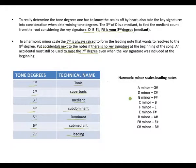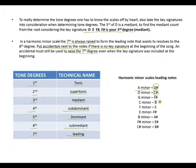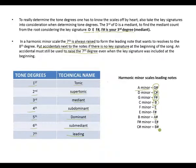Here are the raised leading notes for harmonic minor scales. The leading note for A minor is G-sharp. For D minor it's C-sharp. Remember, leading notes always lie a semitone below the root or tonic. For G minor it's F-sharp, for C minor it's B, for F minor it's E, for E minor it's D-sharp, for B minor it's A-sharp, for F-sharp minor it's E-sharp, and for C-sharp minor it's B-sharp.